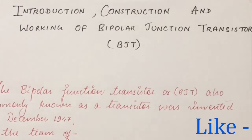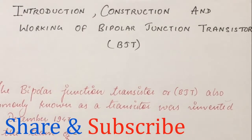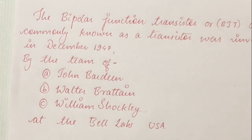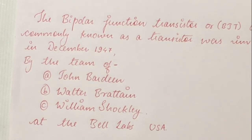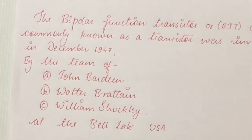The bipolar junction transistor, or BJT, also commonly known as a transistor, was invented in December 1947 by the team of John Bardeen, Walter Brattain and William Shockley at the Bell Labs, USA. Before the transistors, vacuum triodes, which are voltage control devices, were being used. All the work which transistors perform today was performed earlier by vacuum triodes, but there were many advantages of transistors over vacuum triodes, like their size is very small, weight is very less, and they are more resistive to shocks and vibrations. So because of all these advantages, transistors came into existence.